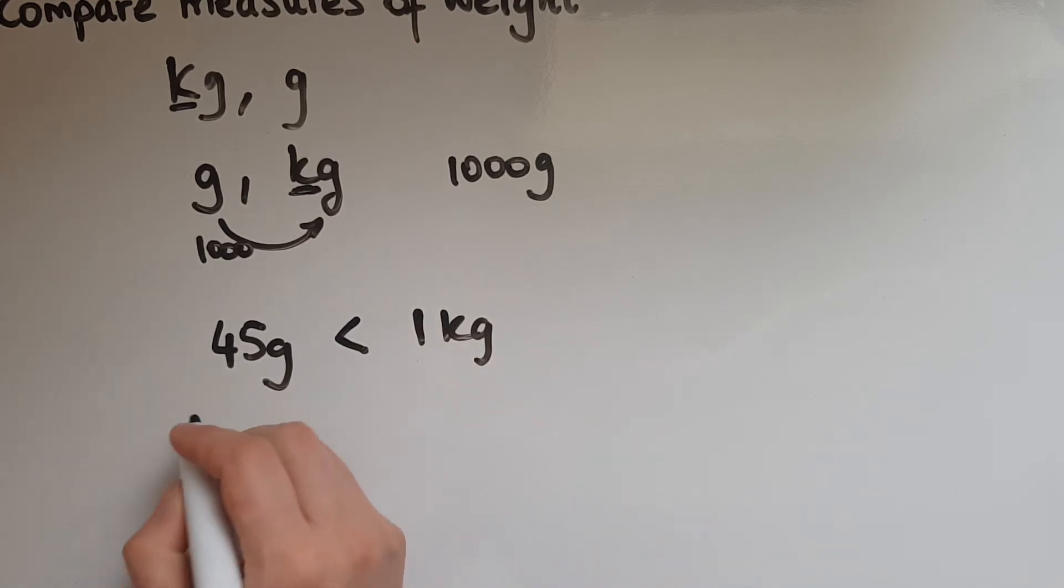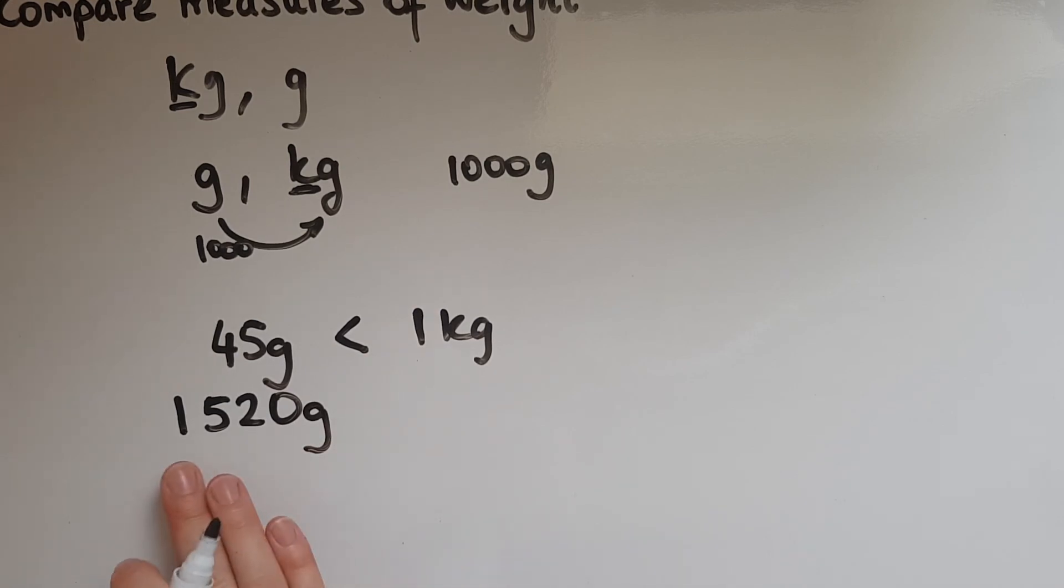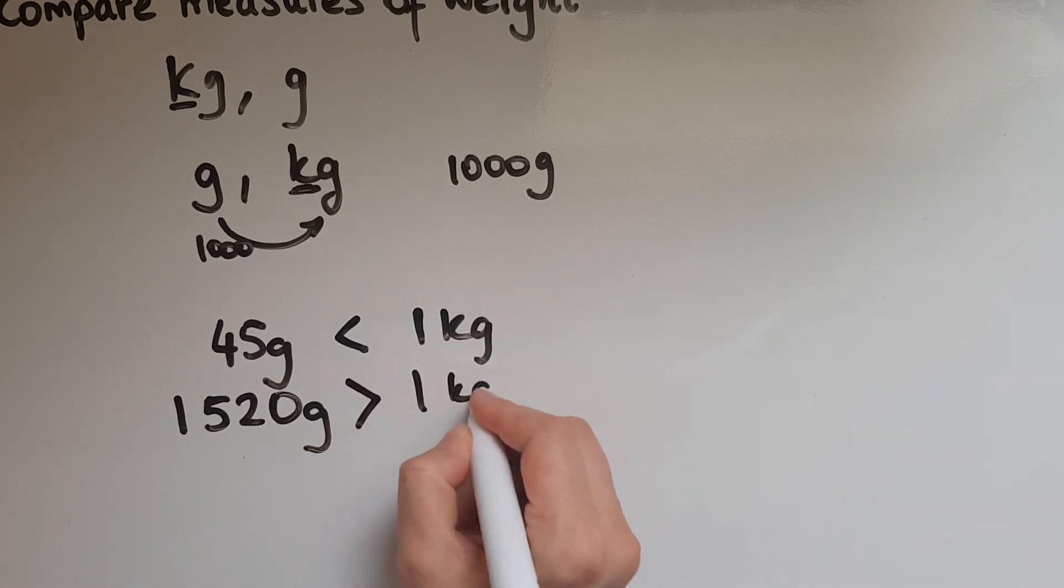But if we weigh something and it weighs 1520 grams, then that's definitely more than a thousand grams, so that is more than one kilogram as well.